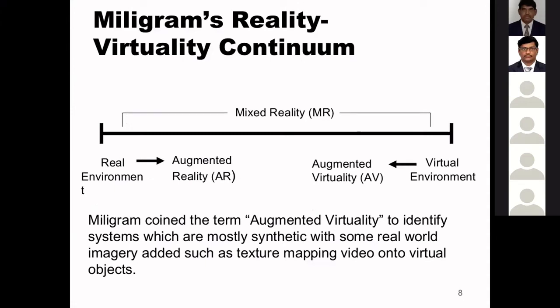Regarding Milgram's reality-virtuality continuum: the scientist Paul Milgram coined the term augmented virtuality to identify systems which are mostly synthetic with some real world imagery added, such as texture mapping video onto virtual objects. Augmented virtuality means bringing real world objects into the virtual environment. We can call both augmented reality and augmented virtuality as mixed reality.